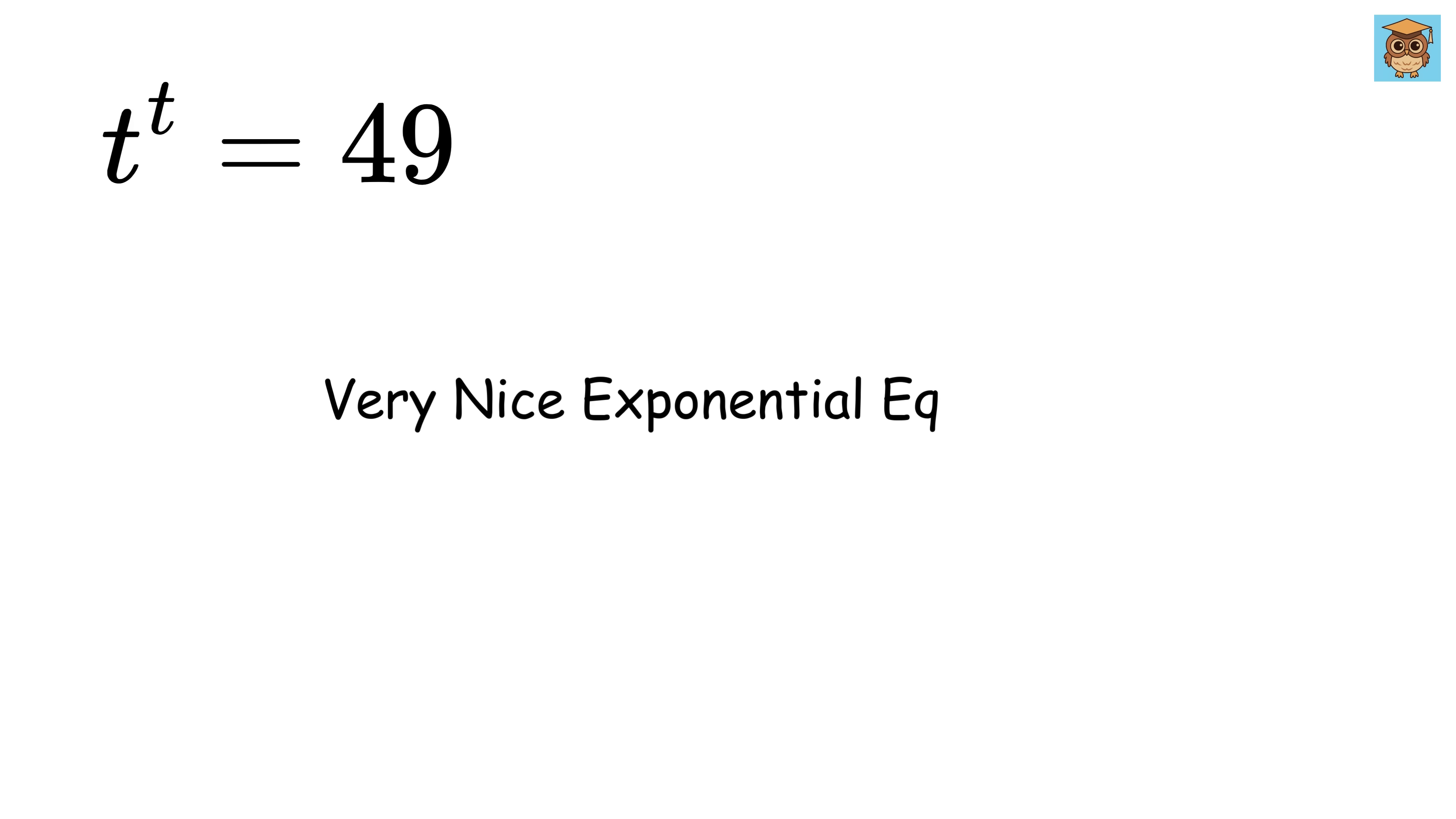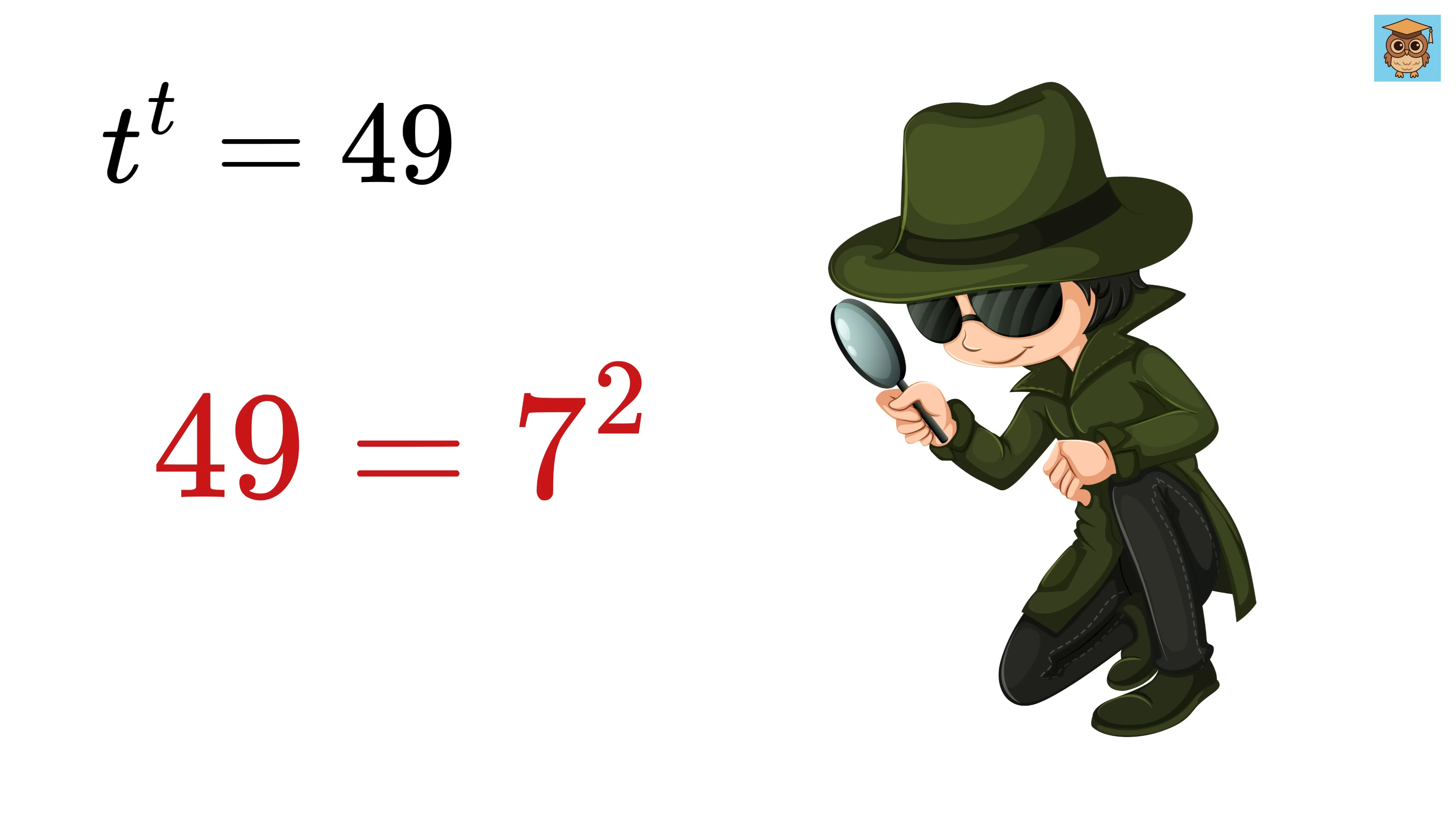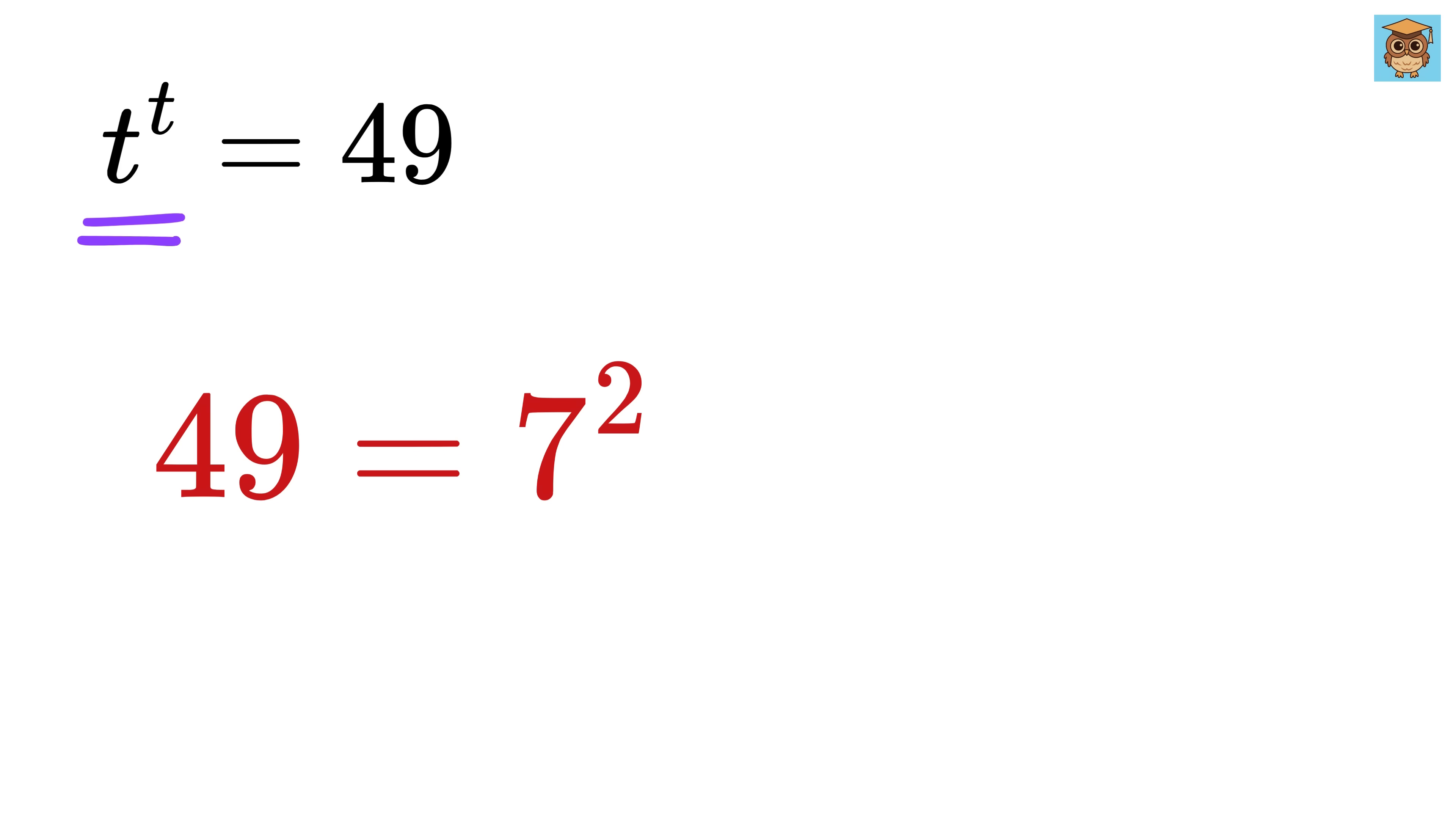Today we have a very nice exponential equation: t raised to t equals 49. We need to solve for t. The first thing that comes to mind is that 49 can be written as 7 squared, but if you look at the equation, we have t to the t, and 7 squared is not of this form. So the answer is completely different and not what you think.